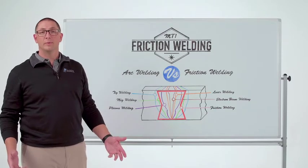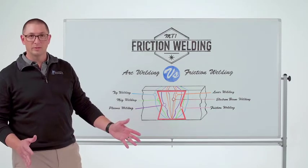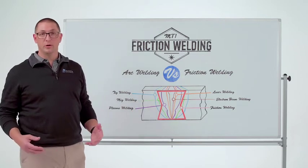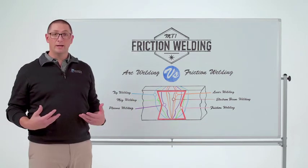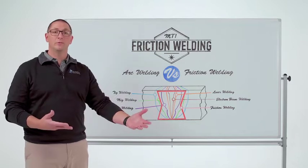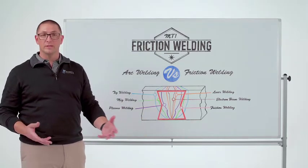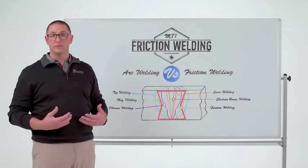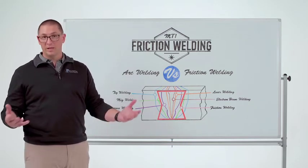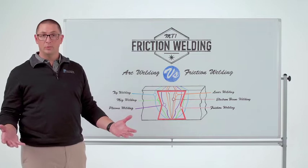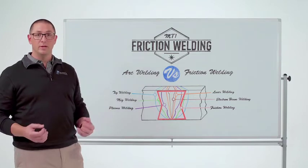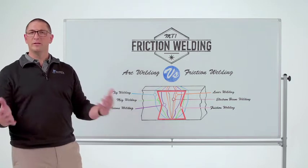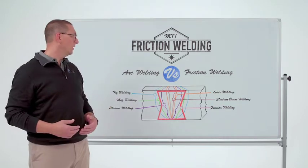Today we're going to talk about arc welding. There are many different types of arc welding, and we'll compare it to friction welding — why you would use one versus the other. As a friction welding manufacturer, we typically involve arc welding processes in some parts we manufacture in our manufacturing services division. For example, we might make an axle with friction welding and then use an arc welding process to weld some brackets on it. So there is a time and a place for each welding process.